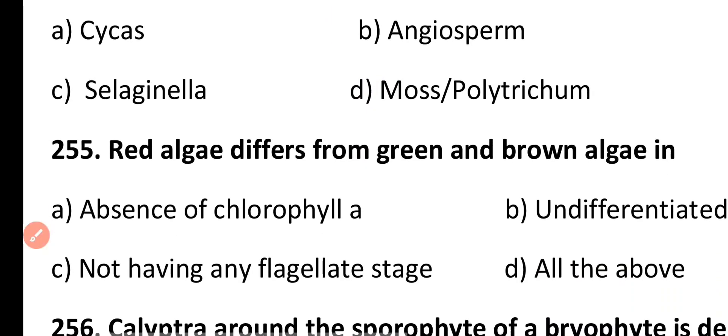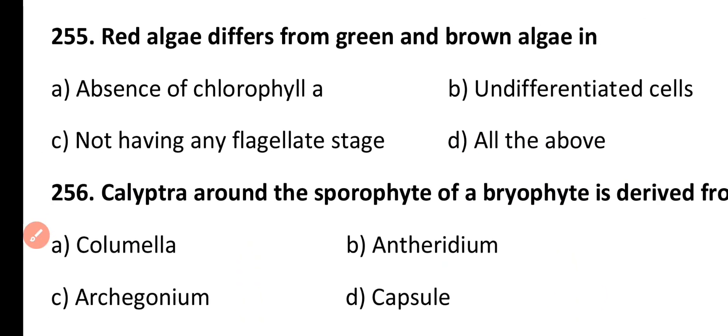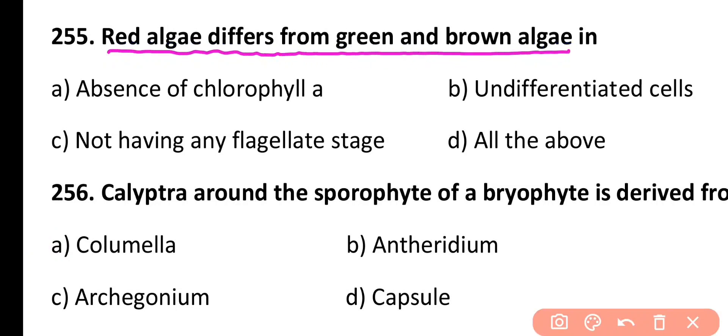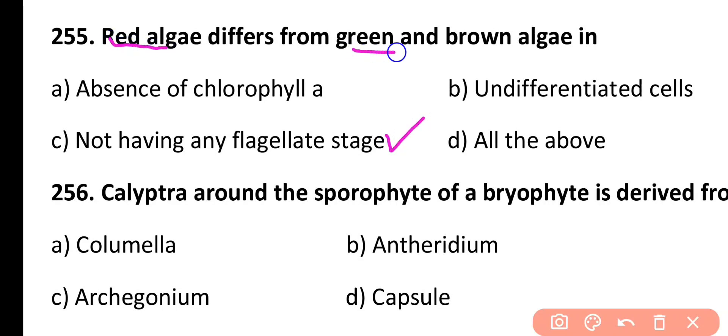Question 255. Red algae differ from green and brown algae in: absence of chlorophyll A, undifferentiated cells, not having any flagellate stage, or all of the above. Correct answer is Option C. Red algae differ because the motile or flagellate stage is absent in red algae, while it is present in green and brown algae.